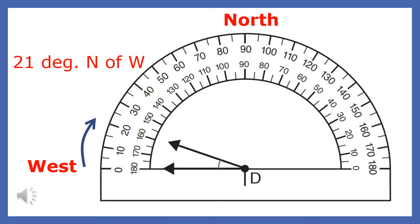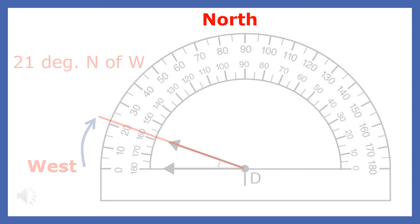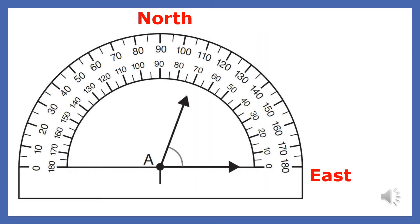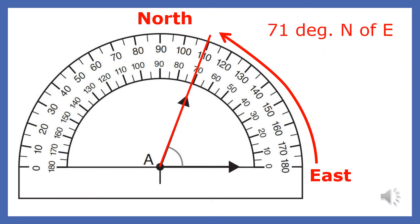In order to find the direction of a resultant, we need to measure the angle it makes with either the west or the east. Before we do this, I need to go over how to use a protractor. First, you need to ignore the angles on the protractor that are greater than 90 degrees. The angle shown here is 21 degrees, so the direction of the force is 21 degrees north of west. The force is close to the east, so to find the direction we measure the angle the force makes with the easterly direction. Since we ignore the angles on the protractor greater than 90 degrees, the angle is 71 degrees. We would call it 71 degrees north of east.